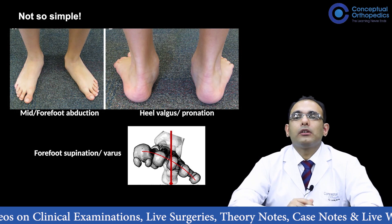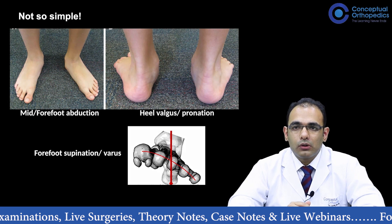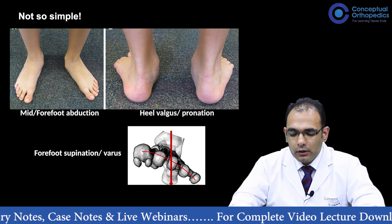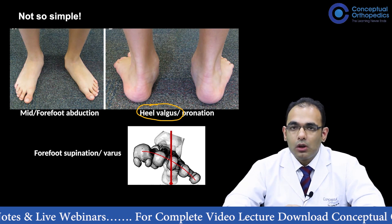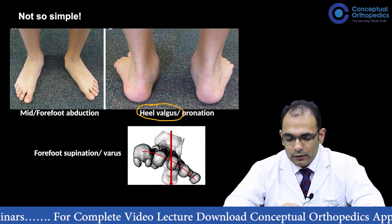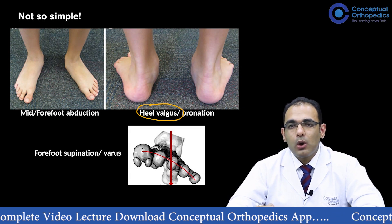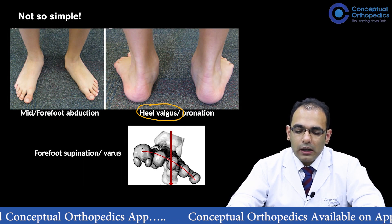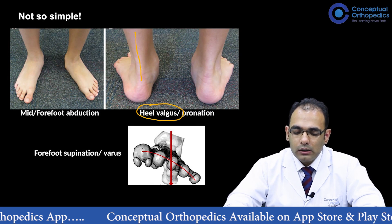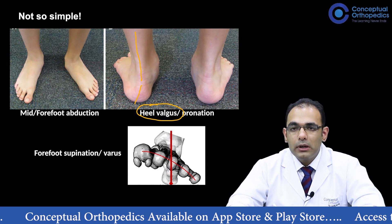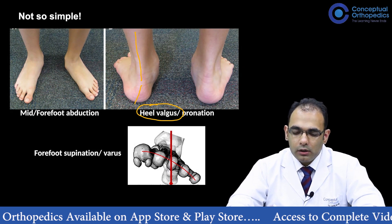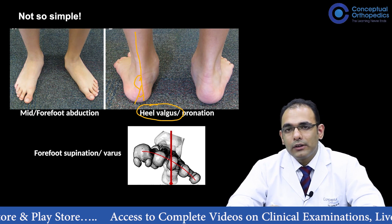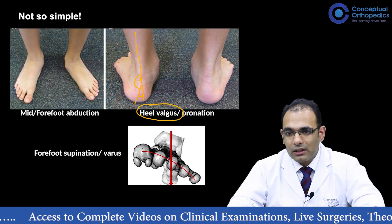So what are the deformities that actually happen in a flat foot, or a pes planus, or a pes plano valgus foot? First is a heel valgus, and some people call it a pronation deformity as well. To examine for heel valgus, if a patient is standing and you are standing behind the patient, looking at the back of the foot and the ankle — you draw an imaginary line along the axis of the Achilles tendon and a line along the axis of the heel or calcaneum. Normally these two lines are either parallel or there is less than 10 degrees of valgus angulation. If this angle is more than 5 to 10 degrees, that means there is significant hindfoot valgus.